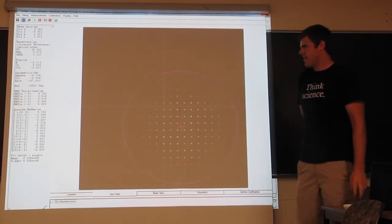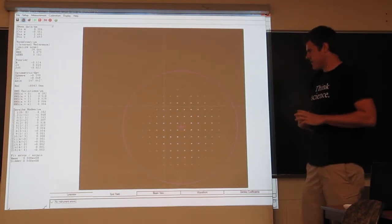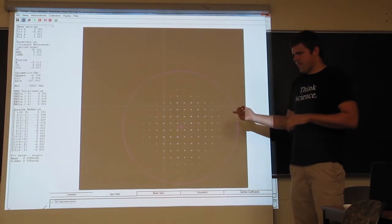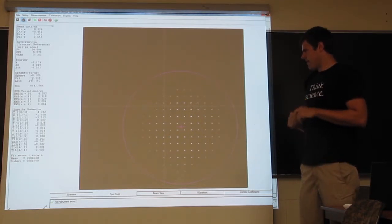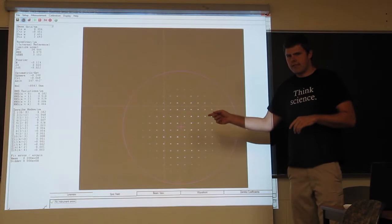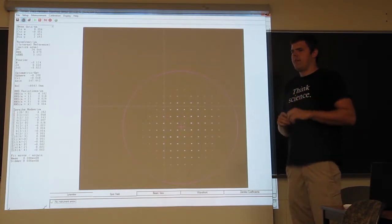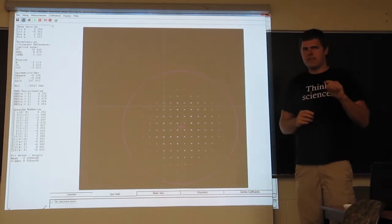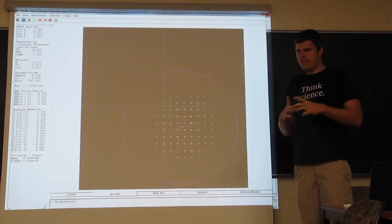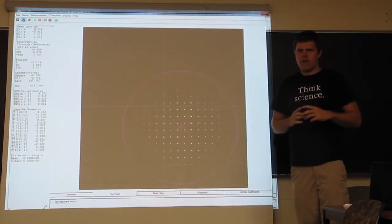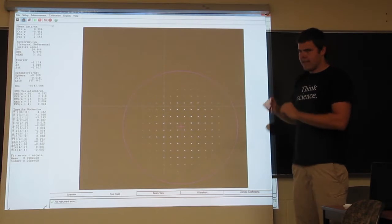So here's a screenshot of the Thorlabs wavefront sensor software. So I'd like to point out a few things. So first off, you can see this is the raw image of the CCD camera with the focus spots from the microlens array. And I'd like to point out that the pink cross is the centroid calculated from the beam, and the pink circle is the analysis pupil. So if you remember, the Zernike's are defined on a unit disk, and so you want the analysis pupil to be set to the size of the beam so that you're analyzing the beam and not half the beam or mostly black space.